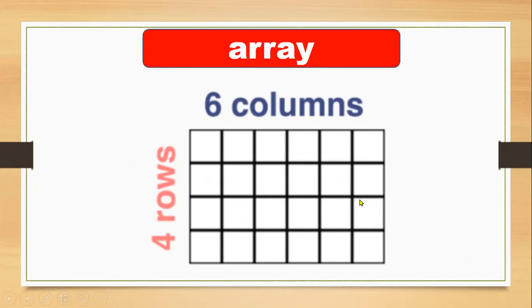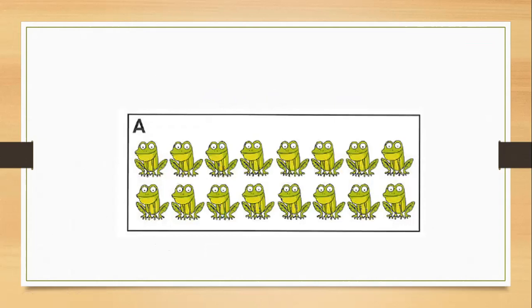And you have six columns: one, two, three, four, five, and six. So this array has four rows and six columns. Rows mean you go from left to right. Columns go from top to down.